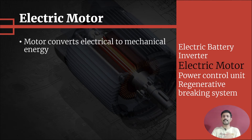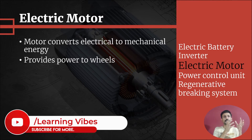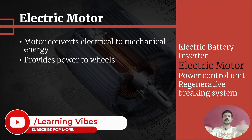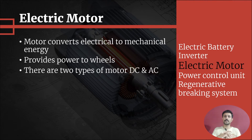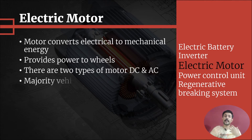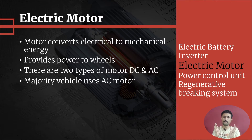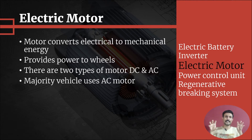Motors convert electrical energy into mechanical energy. This mechanical power is provided to the wheels, through which our vehicle moves forward. There are two types of motors used in electrical vehicles — DC and AC — but the majority are AC motors. The motor is the unit which converts our electrical energy into mechanical energy.